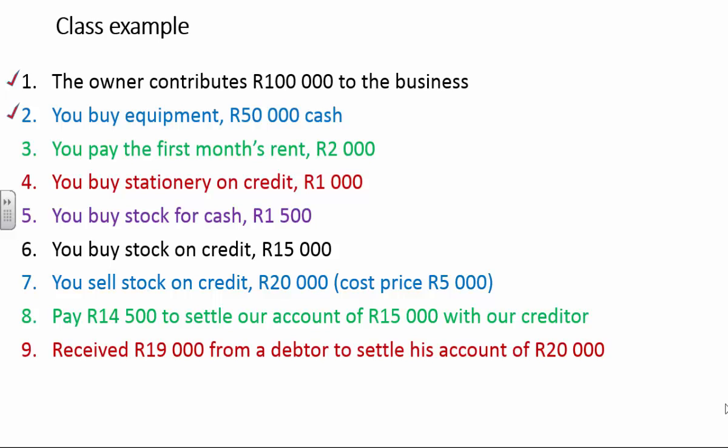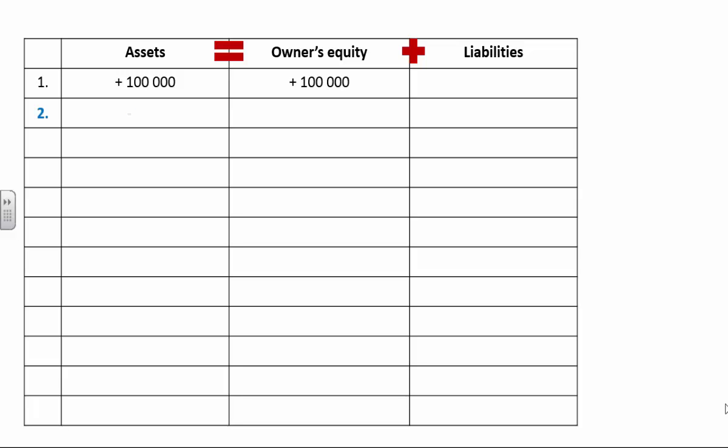Let's look at the second transaction: you buy equipment for R50,000 cash. Where did the money come from? I took it out of my bank, which is an asset, so my assets will be decreasing. I bought equipment, and equipment also falls under assets, so my assets are increasing. My bank is decreasing, but my equipment is increasing — more equipment means more assets. Whether you record these on two separate lines or as a single net entry, both are correct. The accounting equation balances.